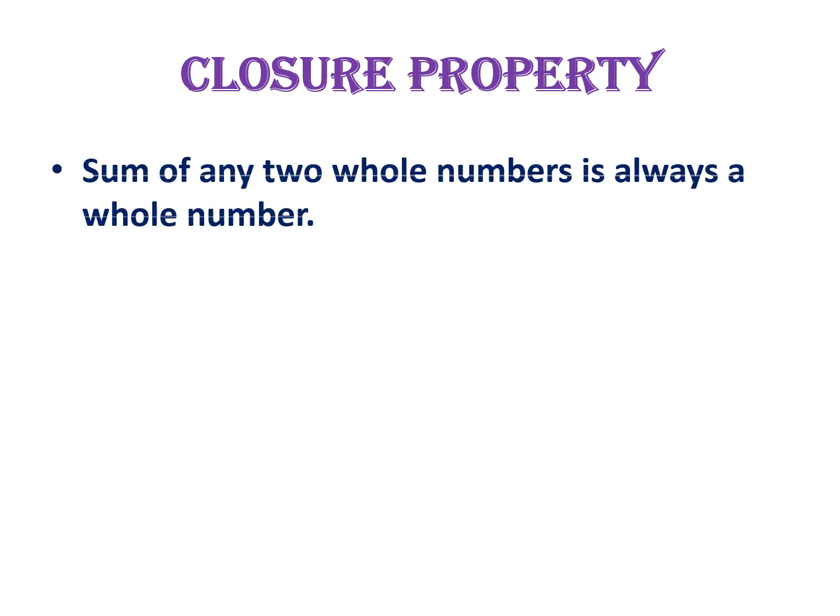The first one is closure property. Take any two whole numbers and add them. Is the result a whole number? Definitely. If we add any two whole numbers, we get another whole number only. This is the first property of whole numbers — the sum of any two whole numbers is always a whole number.